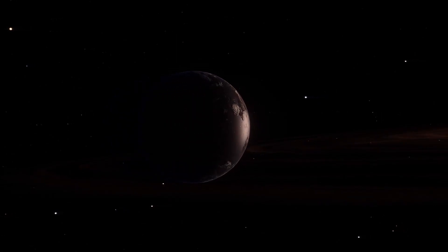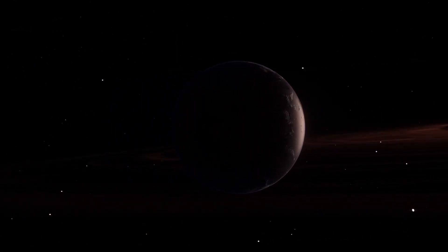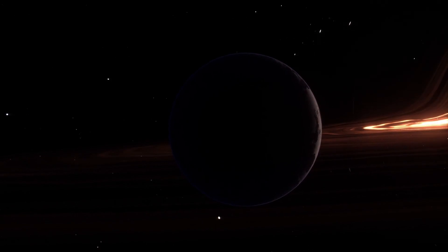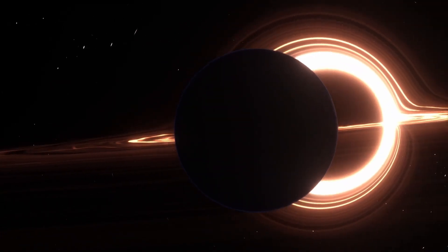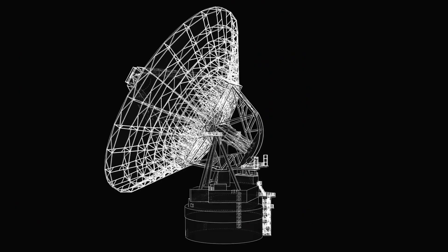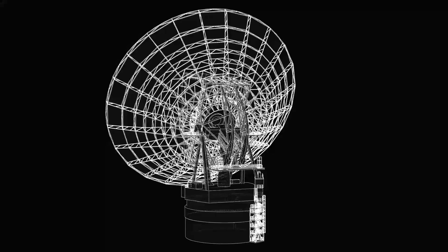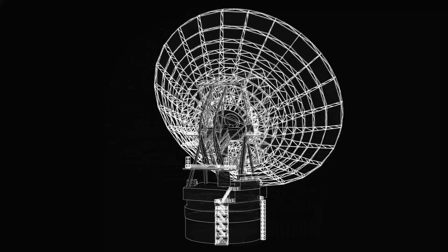Still, despite all that, scientists are very interested in Proxima b. Why? Because it's one of the closest Earth-sized planets we've found, and it might just have some liquid water. That makes it one of the best places to look for life beyond our solar system.